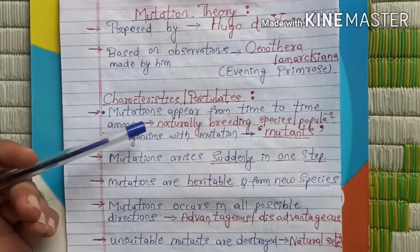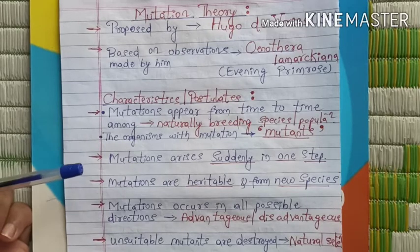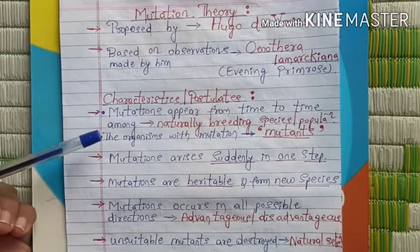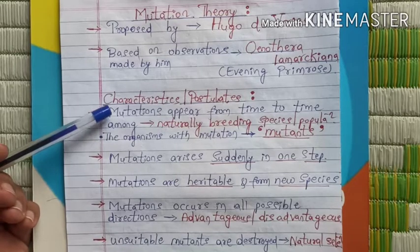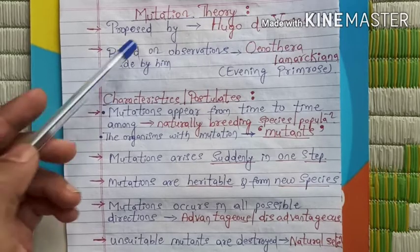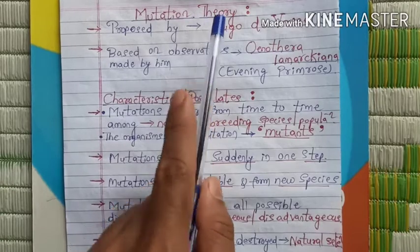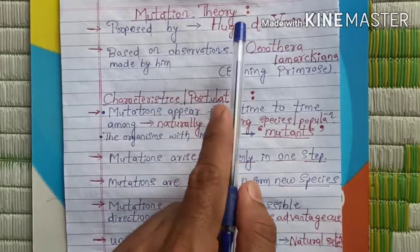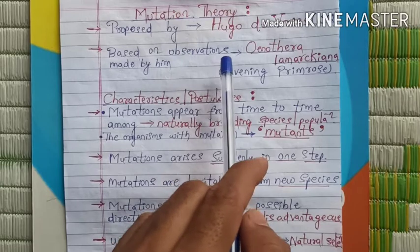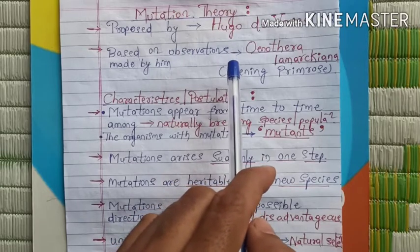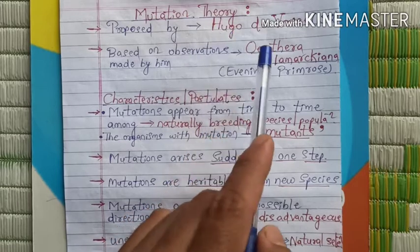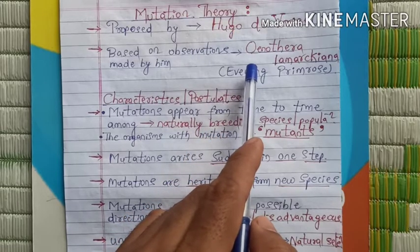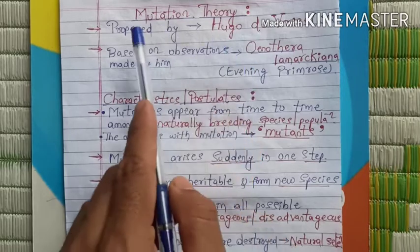Welcome back to the SAM Biology Classes Online. I am Saleem. Today we are going to study another important concept of evolution — that is Mutation Theory. As I told you, there are many theories which explain about evolution. The first important theory is Lamarckism, then the theory of natural selection, which is Darwin's theory.